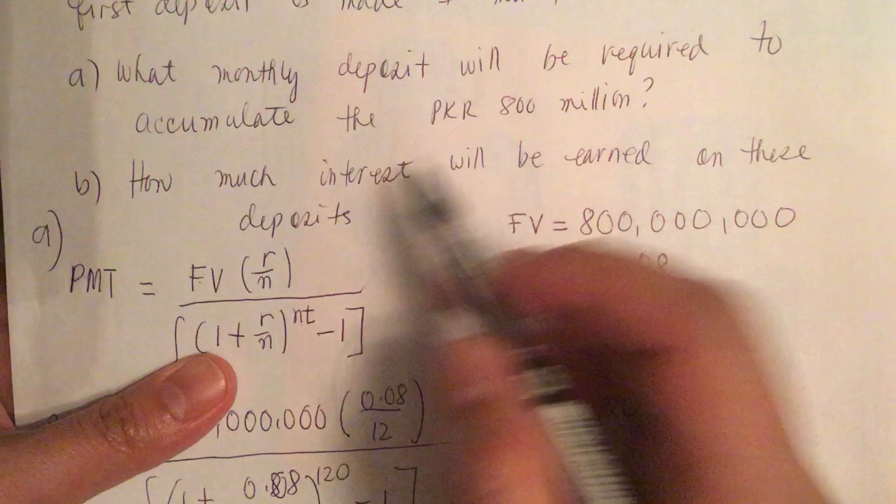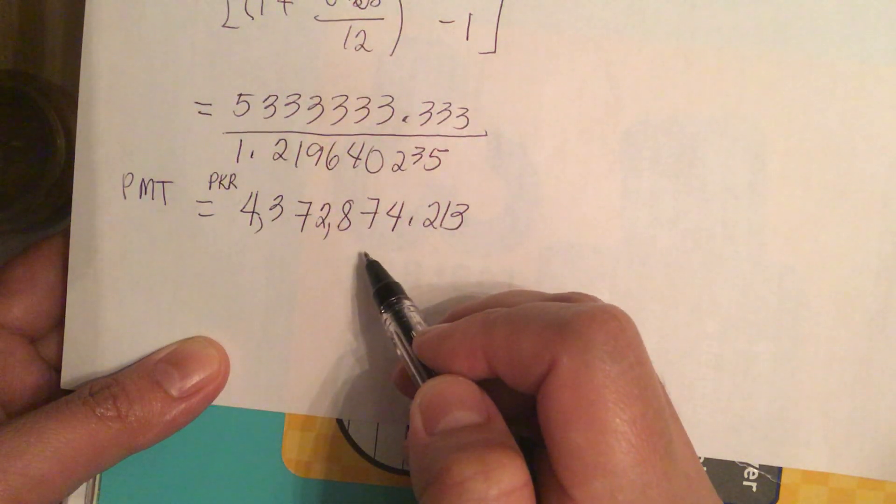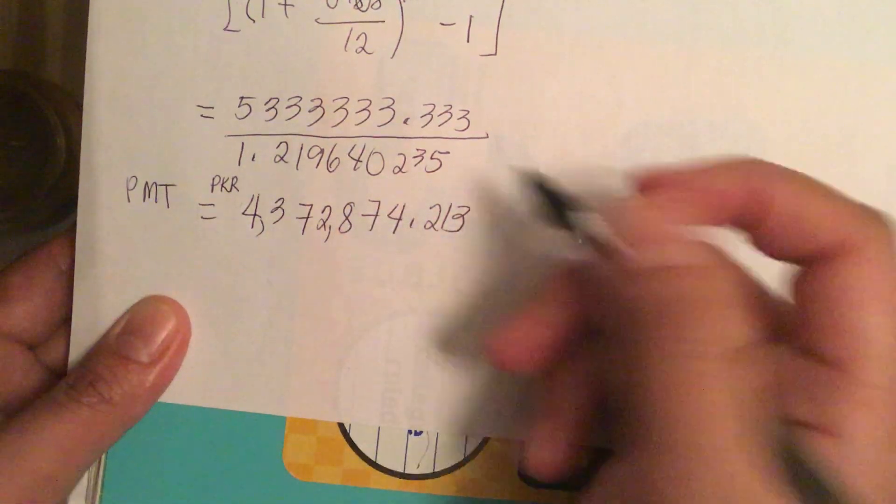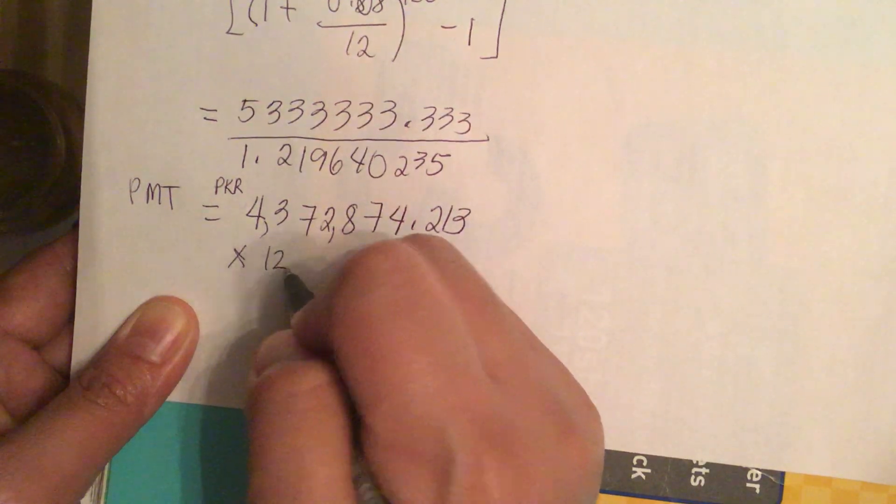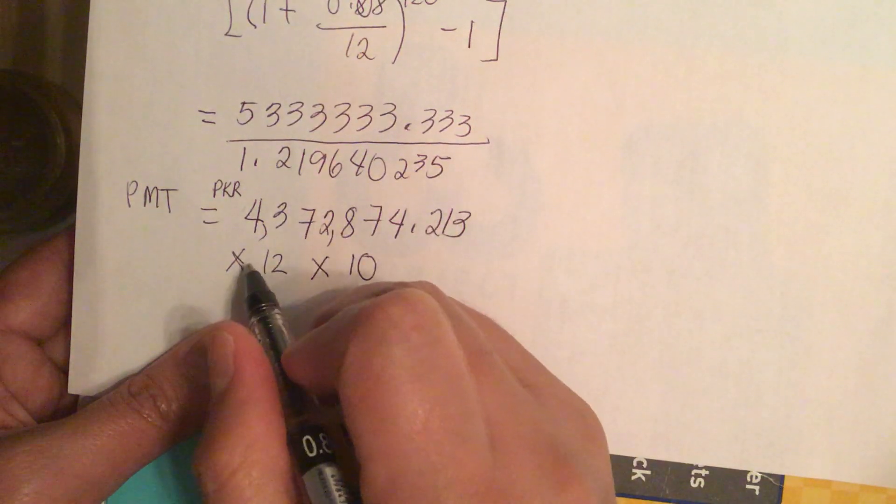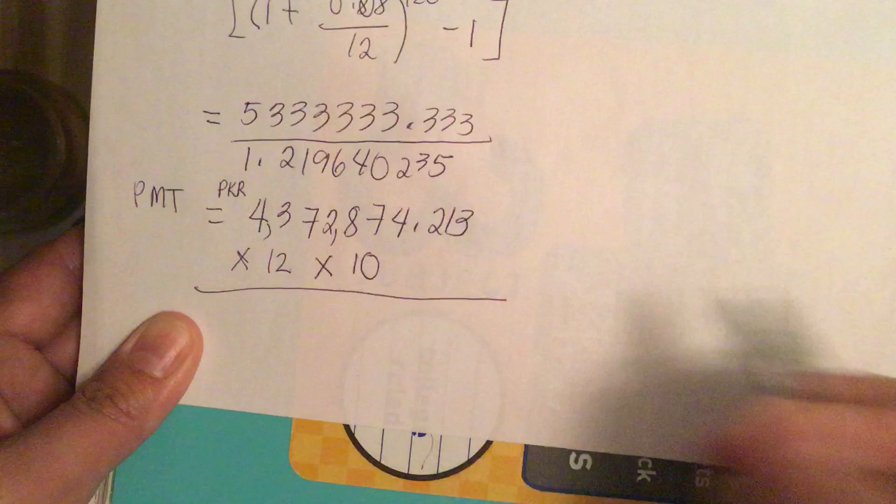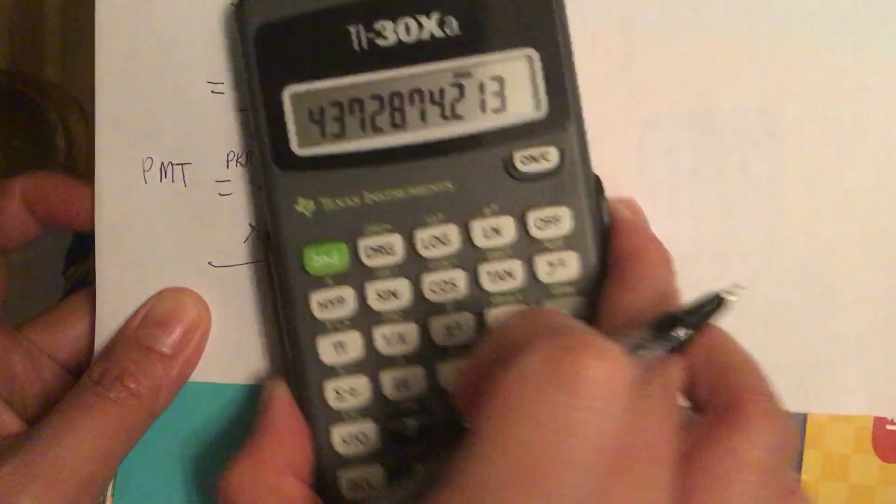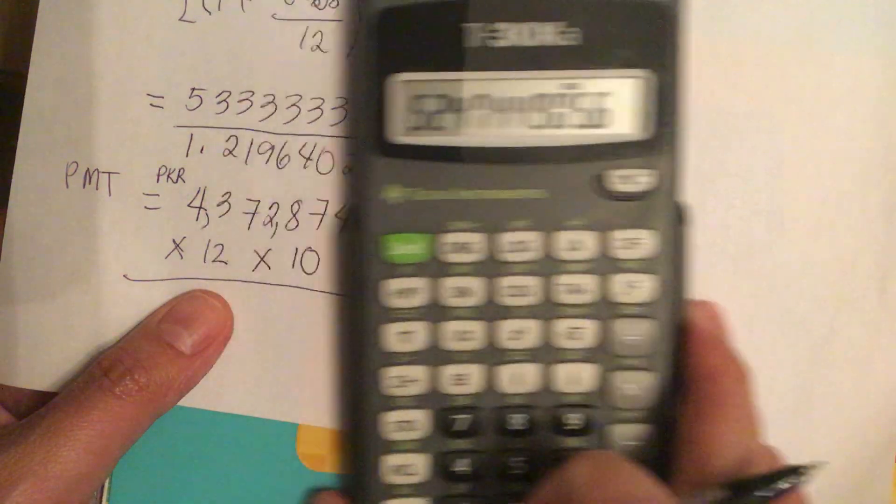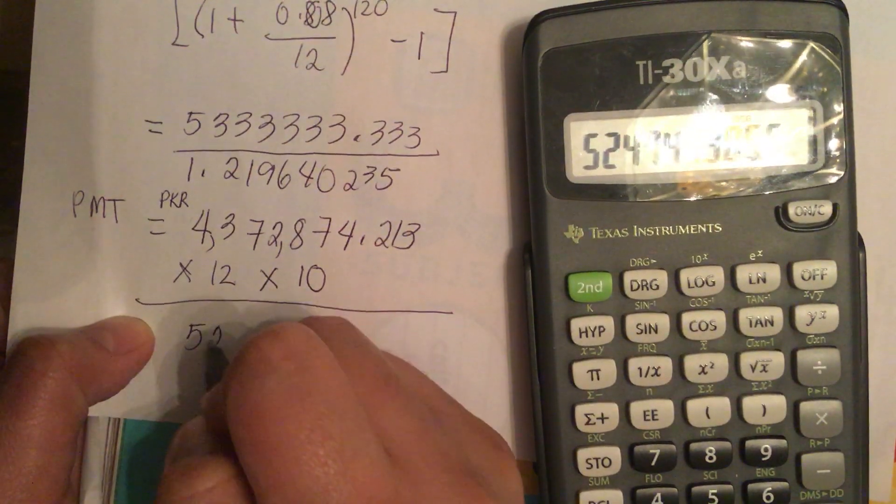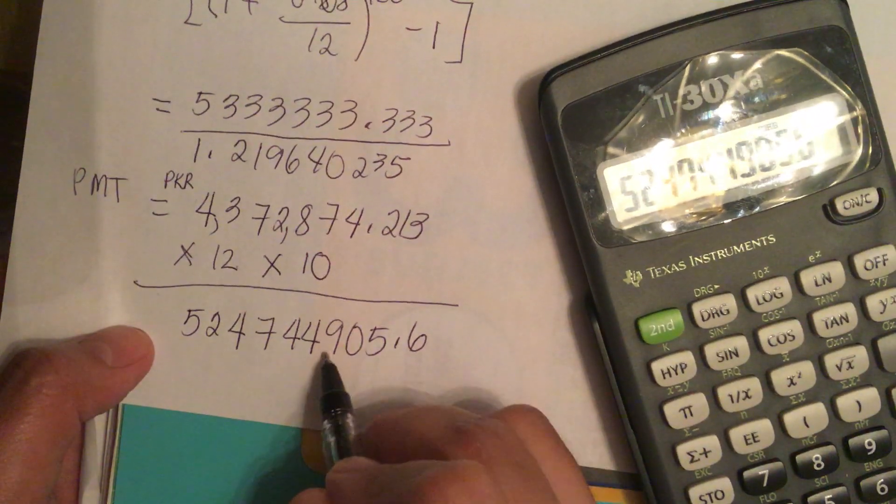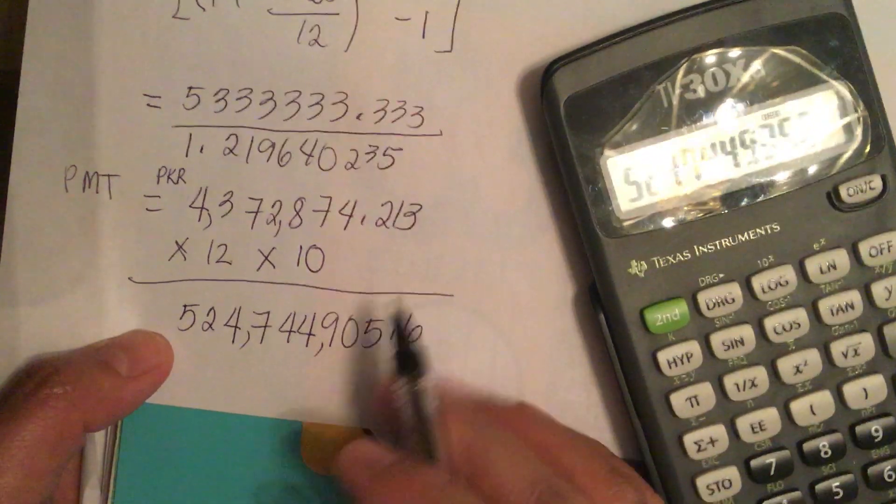Now part B, how much interest will be earned on these deposits? So this is the monthly deposit: 4 million, 372 thousand, 874.213. We multiply this by 12 because it's monthly and by 10 for the years. This equals 524,744,905.6.